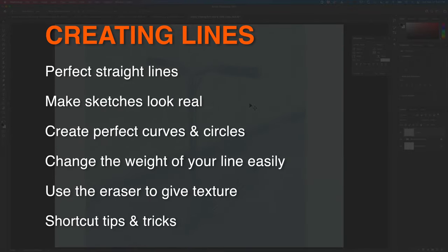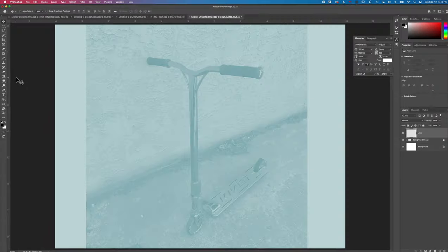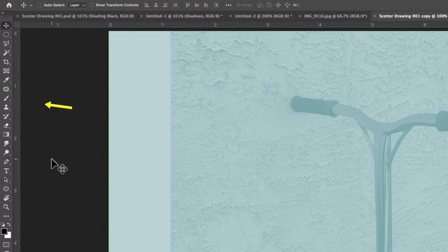Hey, it's Ben here. In this tutorial we're going to have a look at how we create perfect straight and curved lines in Adobe Photoshop. We'll start with the straight lines. We're going to be using the brush tool to do this, because it creates nice texture. The brush tool works really nicely and we'll mix that up with the eraser tool.